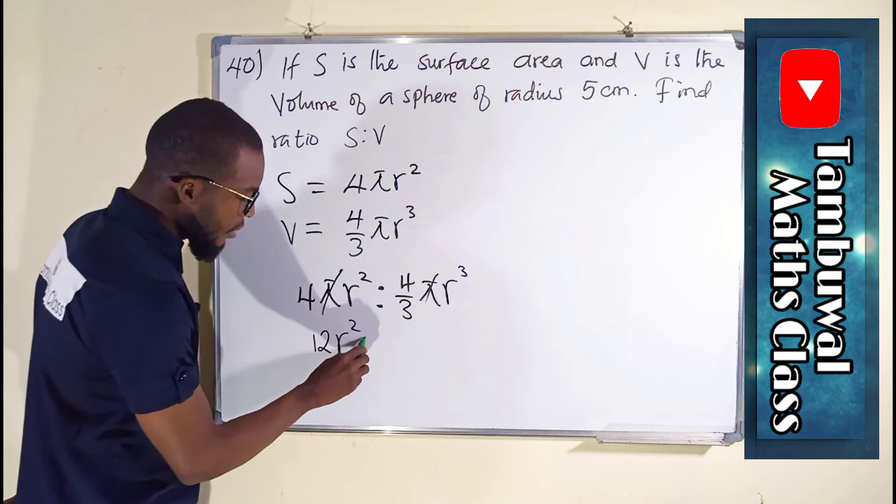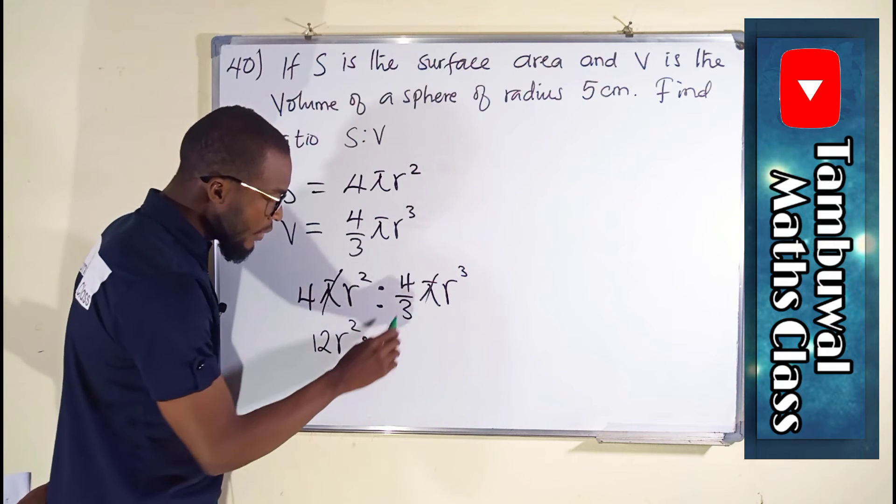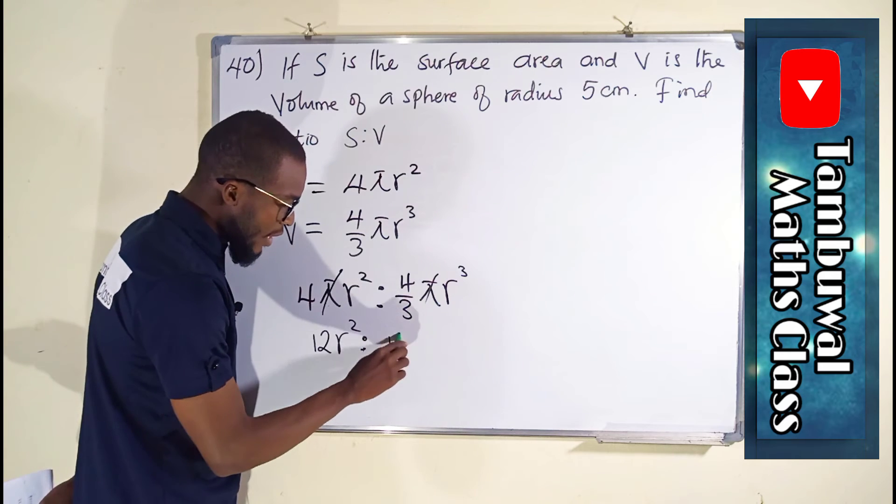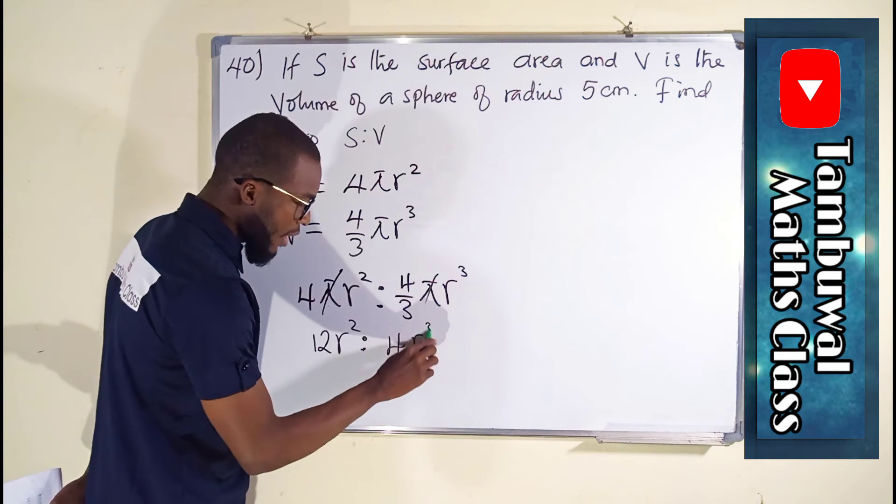We have r to the 2nd power. This times 3 will just cancel this 3, leaving only 4 here, r to the 3rd power.